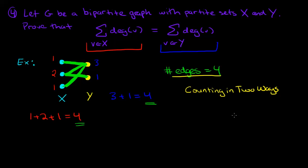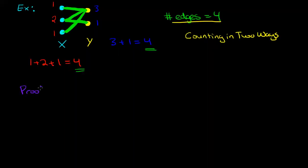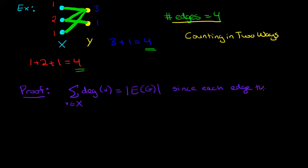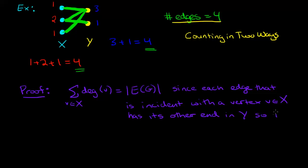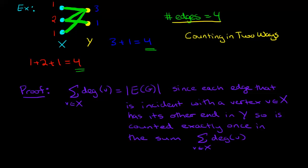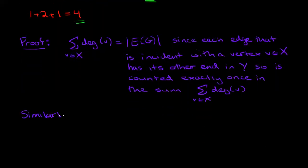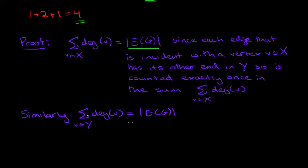This gives a hint as to how to prove this theorem using a technique called counting in two ways. To prove that the red sum equals the blue sum, I'll show that the red sum equals the number of edges, and the blue sum also equals the number of edges. If you count the same thing in two different ways, then the two results must be equal because they're counting the same thing.